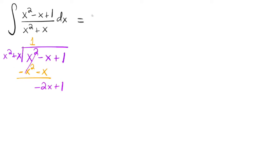So what this means is that this is equal to the integral of 1, which is the quotient dx, and then plus negative 2x plus 1, which is the remainder over x squared plus x dx. And so that's what this fraction rewritten is the same as 1 plus negative 2x plus 1 over x squared plus x.